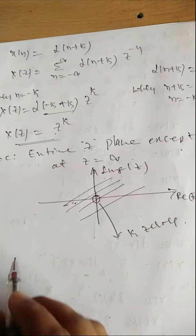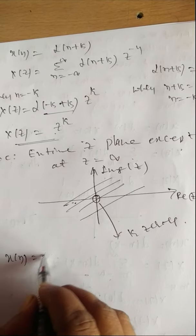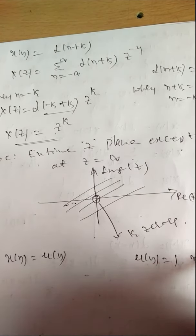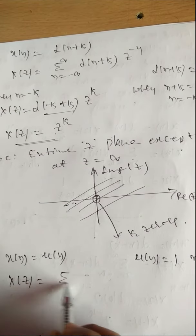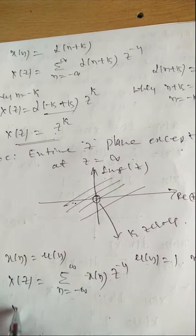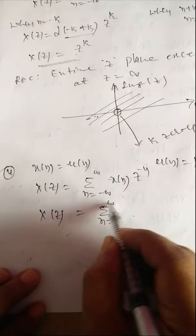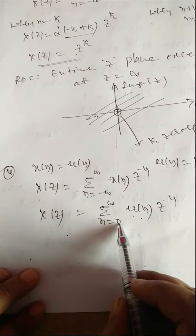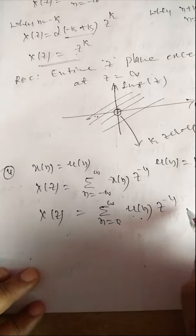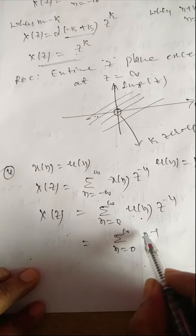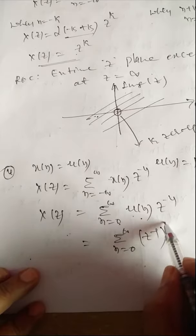Fourth problem: X(n) = u(n). The definition of u(n) is that its value is 1 when n ≥ 0. Using the Z-transform definition — summation from n = -∞ to +∞ of X(n) · Z^(-n) — because of u(n), the summation range changes to n = 0 to ∞. So X(z) = summation from 0 to ∞ of u(n) · Z^(-n). Since u(n) = 1 in that range, this becomes summation from 0 to ∞ of Z^(-1)^n.